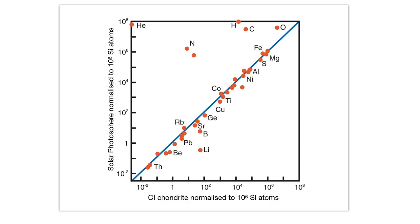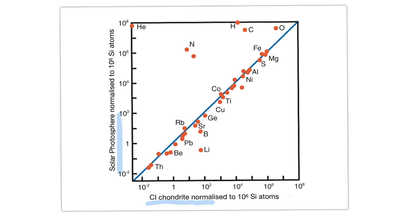This is one of the most fundamental — maybe the fundamental — plot in cosmochemistry and meteoritics. On the y-axis there's the composition of the elements in the solar photosphere versus the composition of the elements in CI chondrites. I will now show why this is so important, but first we need to really understand this plot.